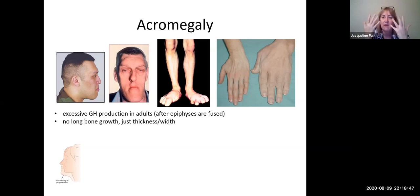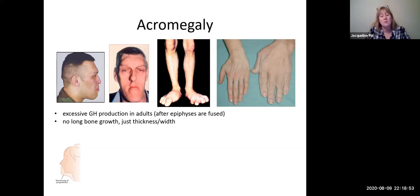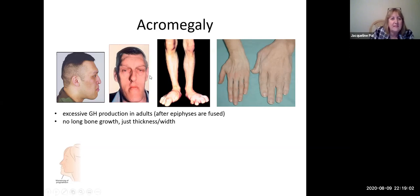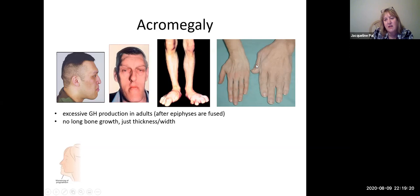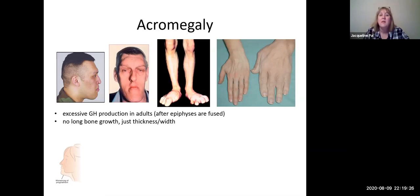Typical places for bone growth are the face — you can see extra bone on the frontal bone, and the chin becomes very prominent. The hands and feet grow as well. On the left is a picture of a normal hand, and on the right you can see the glove doesn't fit that hand, so you need specialized clothing.